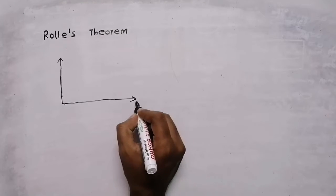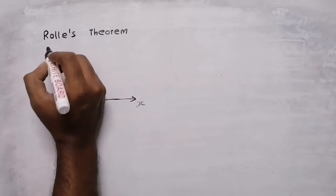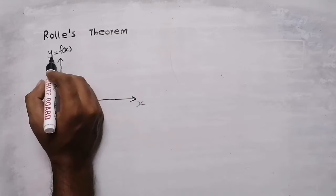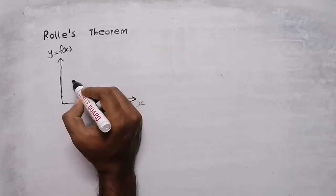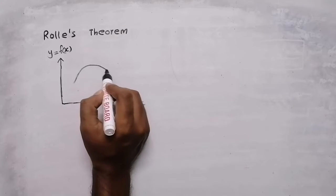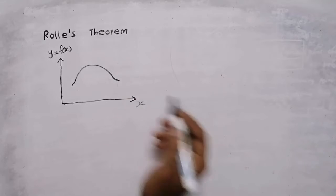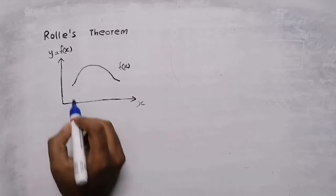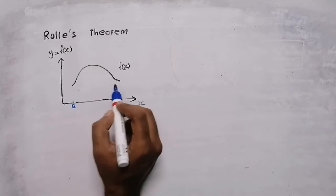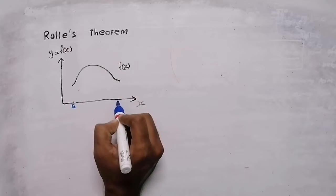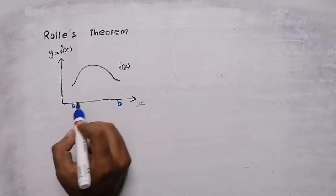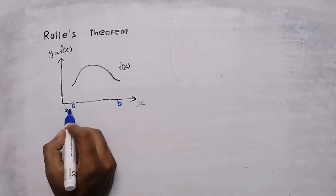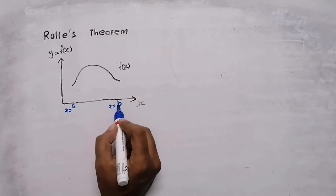For drawing a graph, there will be an x-axis and y-axis, where y is a function of x. That means as x varies, y also varies. Suppose we have a function like this — this is the function f of x. In the interval, at this point I am going to mark it as a, and at this point I am going to mark it as b. So in interval a to b on the x-axis, that means x equal to a and x equal to b.